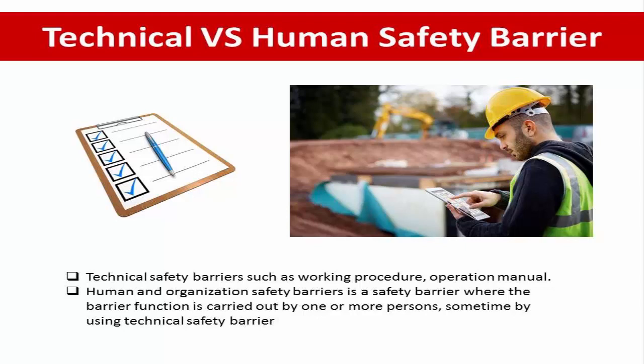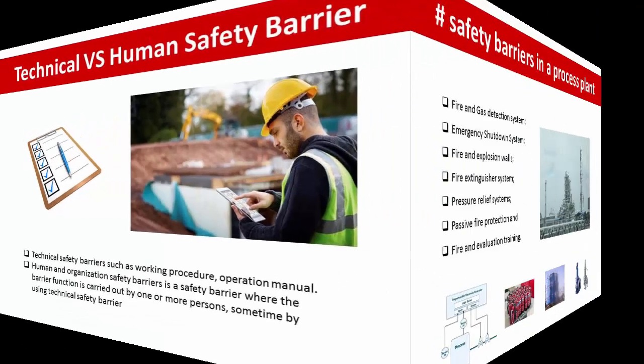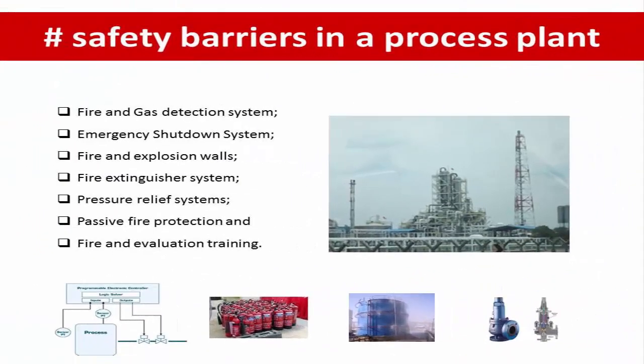Example safety barriers in a process plant: a process plant usually has a range of safety barriers, among them fire and gas detection systems, emergency shutdown systems, fire and explosion walls, fire extinguisher systems, pressure safety systems, passive fire protection, and fire and evacuation training.